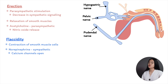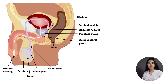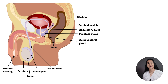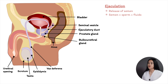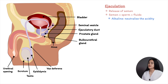Now let's move on to ejaculation — the release of semen from the penis. Semen is made up of sperm and fluids from the seminal vesicles, prostate gland, and bulbourethral glands. These fluids are alkaline to neutralize the acidity of the male urethra and vagina. The fluid also contains fructose because sperm needs energy for its travels, and provides lubrication.